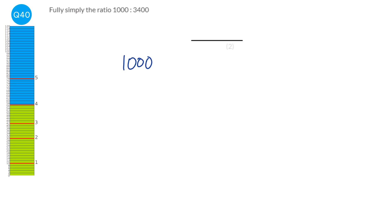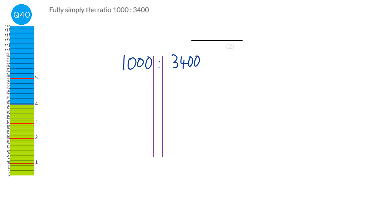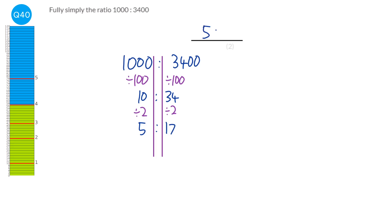Simplifying a ratio is similar to simplifying fractions — you do the same thing to both sides. I notice both numbers have two zeros at the end, so divide by 100: that gives 10 and 34. These are both even, so divide by 2: giving 5 and 17. Five and 17 are both prime numbers, so there's nothing further to cancel. The answer is 5 to 17.